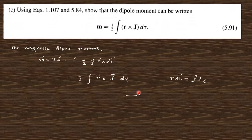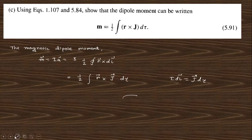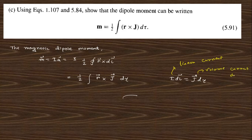Problem 5.60: using equations 1.107 and 5.84, prove the given result. The magnetic dipole moment is m = I × A, where I is current and A is area. The area can be found from the given relation. Converting I dl into J dτ (where I dl is the linear current density, J dτ is the volume current density over a small volume element), and combining everything, you finally obtain this expression.